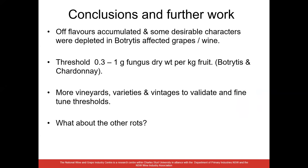Some conclusions: off flavours accumulated and some desirable characters were depleted in Botrytis-affected grapes and wine. The threshold for Botrytis on Chardonnay grapes is somewhere between 0.3 and 1 gram fungus dry weight per kilogram of fruit — between level one and perhaps one and a half on the visual scale. We really need to look at more vineyards and certainly more varieties. We want to extend the work to include a red variety, look at more vintages to validate and fine-tune the thresholds, and there is much more work to be done on the other rots.